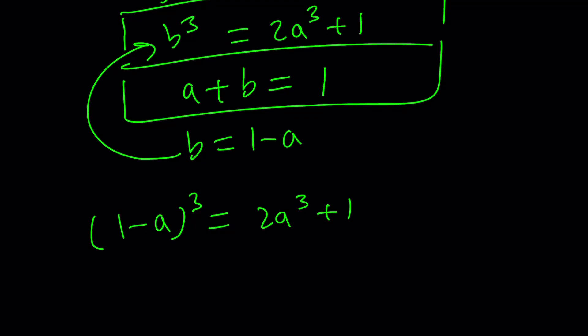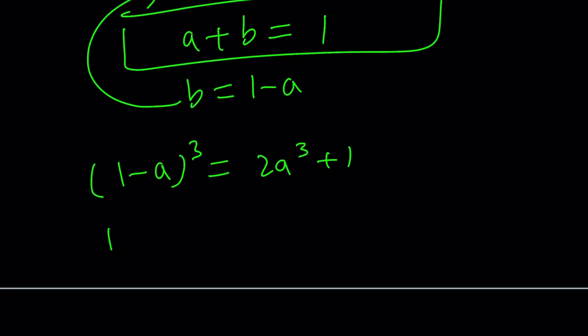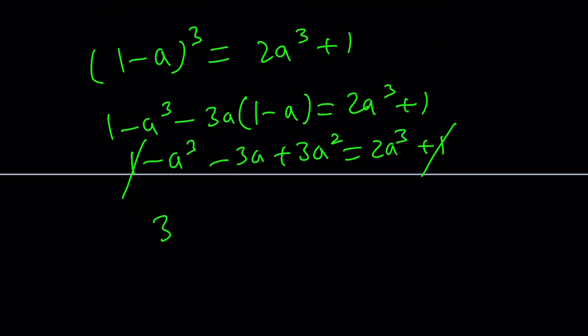Notice that the numbers are much, much smaller here. Obviously, that's going to be a lot easier. 1 cubed minus A cubed minus 3A times 1 minus A equals 2A cubed plus 1. 1, and this is going to give me 1 minus A cubed minus 3A plus 3A squared equals 2A cubed plus 1. 1 cancels out. We end up with a beautiful equation. 3A cubed minus 3A squared plus 3A is equal to 0. If you take out a 3A, it's going to be A squared minus A plus 1 equals 0.